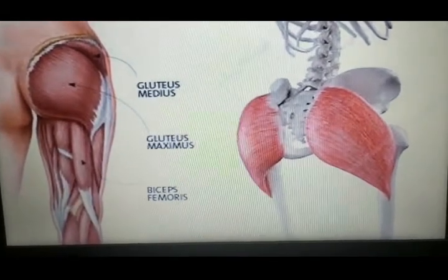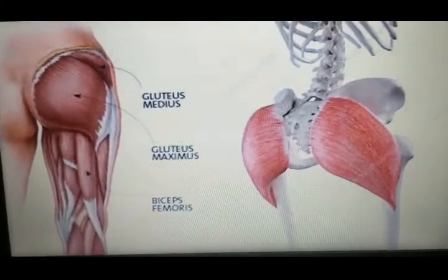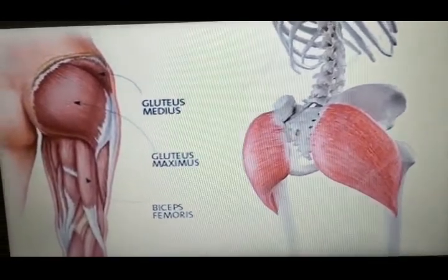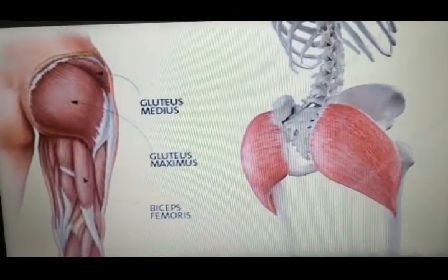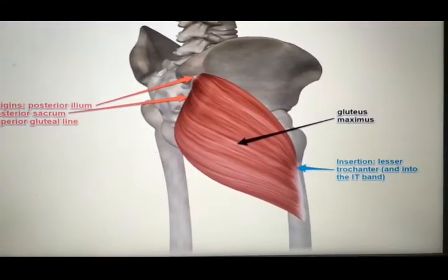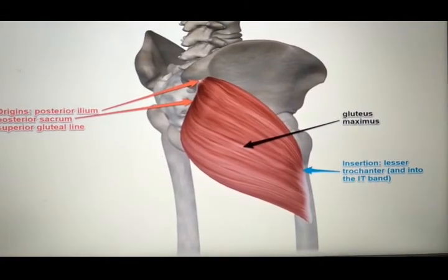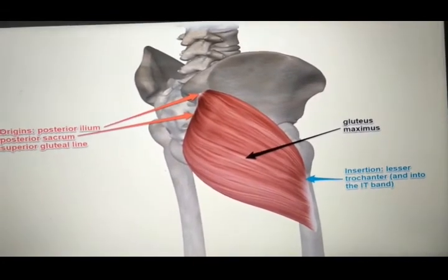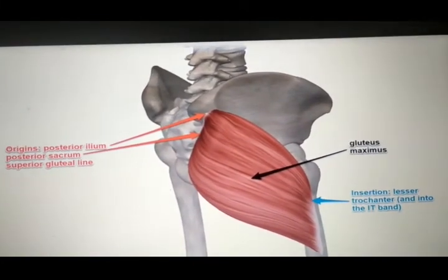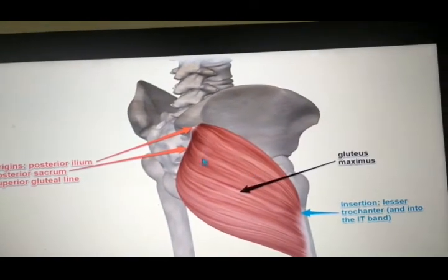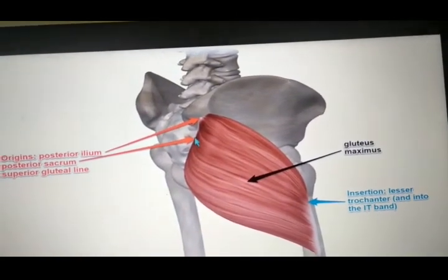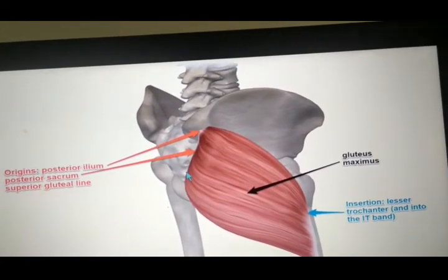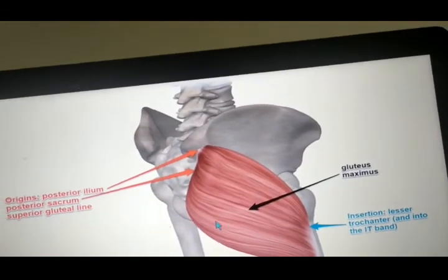Here you can clearly see the gluteus maximus muscle present along with the other muscles of the gluteal region. You can see the gluteus maximus muscle comes from the posterior ilium, sacrum, and coccyx bone and inserts into the gluteal tuberosity and iliotibial tract.